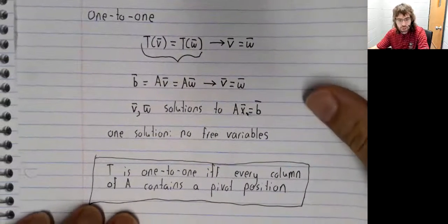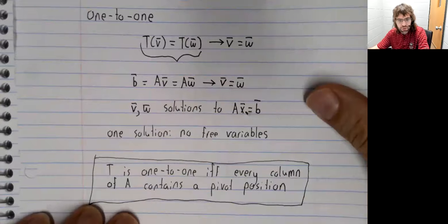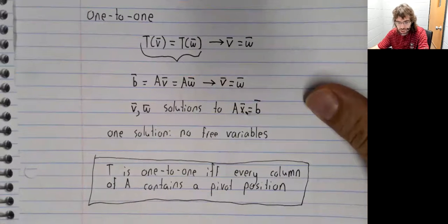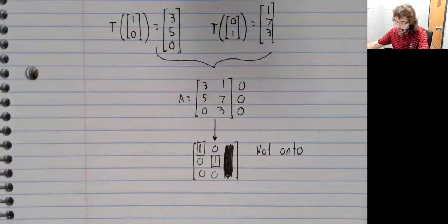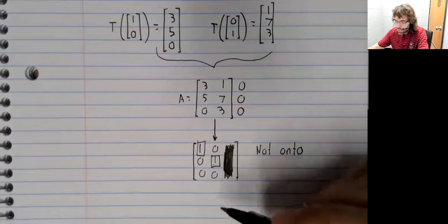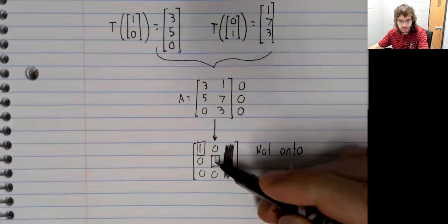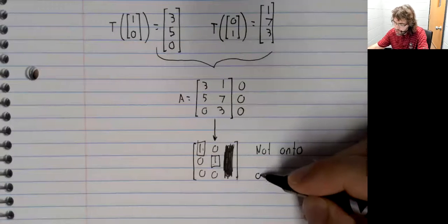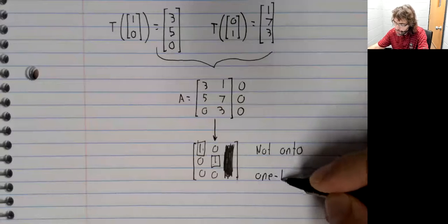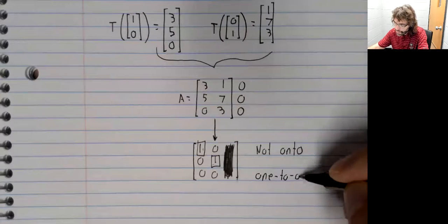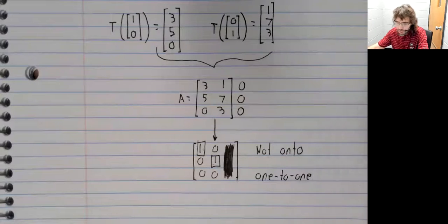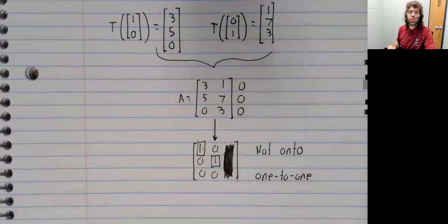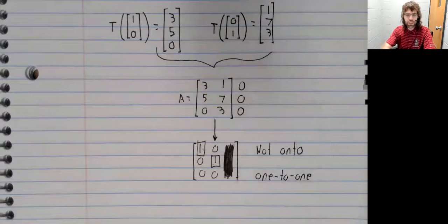It's one-to-one if every column contains a pivot position. And we see that both of these columns do. So it's not onto, but it is one-to-one.